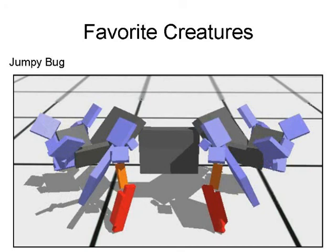I'll show you a few of what are my favorite creatures that I've seen so far. And so this particular one, which I call Jumpy Bug, this was evolved from a population that was first evolved for the ability to jump, and then it was switched for the ability to traverse a rough terrain.